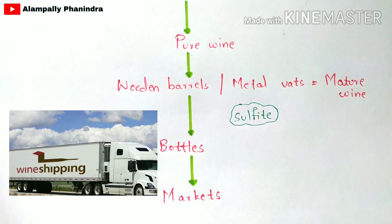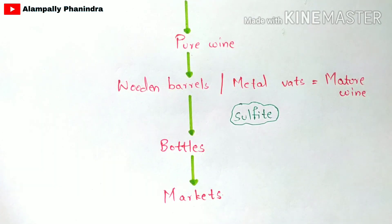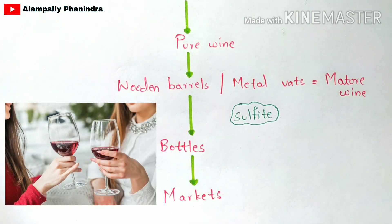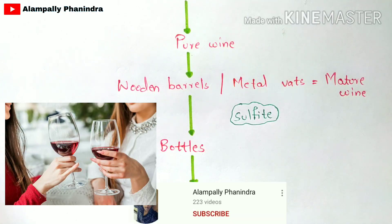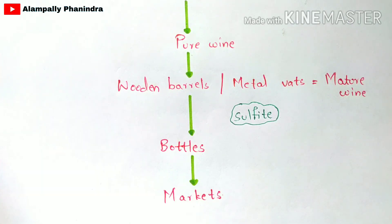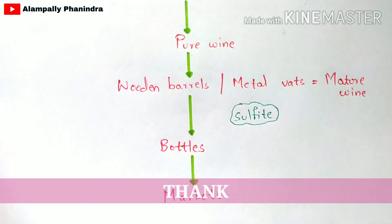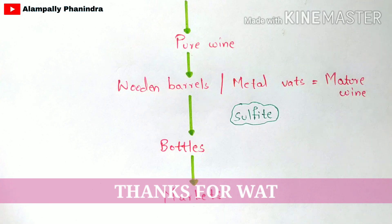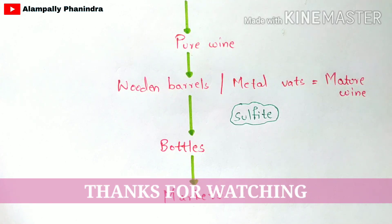This is how the production of wine occurs in industries. If you like this explanation, please like the video and subscribe to the channel for more videos. If you have any doubts regarding this topic, comment in the comment box and your doubts will be clarified. Thank you.